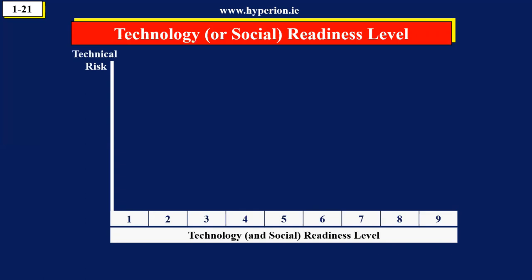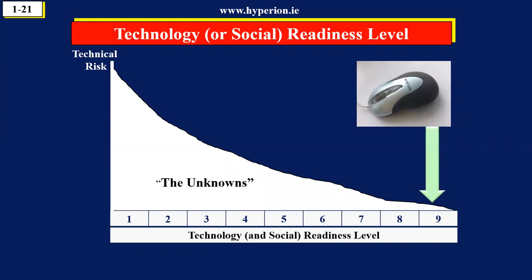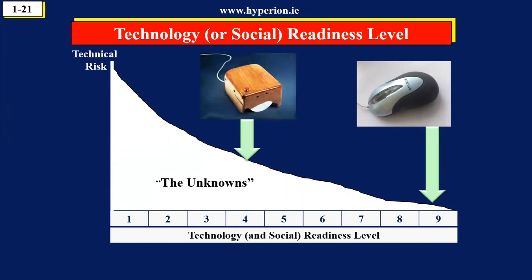What TRL means is it's a measure of the unknowns. TRL 9 — in NASA it was called 'ready for liftoff' — means a technology is fully understood and ready for the market, like the mouse. TRL 1 means there are so many unknowns it's fundamental research. TRL 2 and 3 means we're working on it at laboratory level, and TRL 4 means we have it working in the lab. TRL 5, 6, and 7 is about demonstration, prototyping, and so on. It's not a scientific table — it's a rough indicator NASA developed to see what stage of development a technology was at.